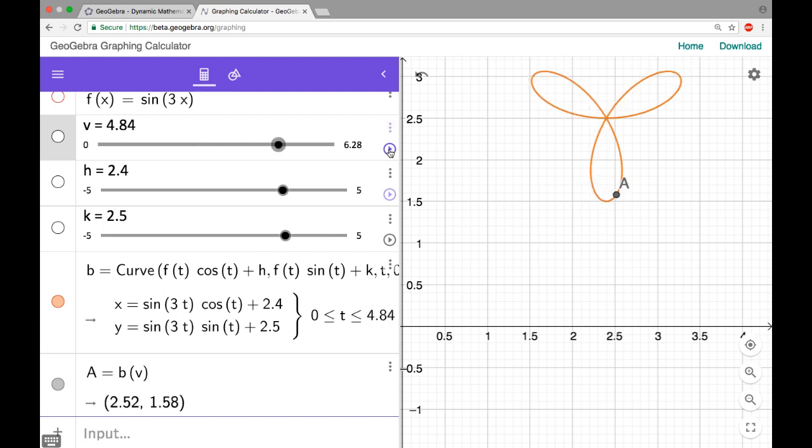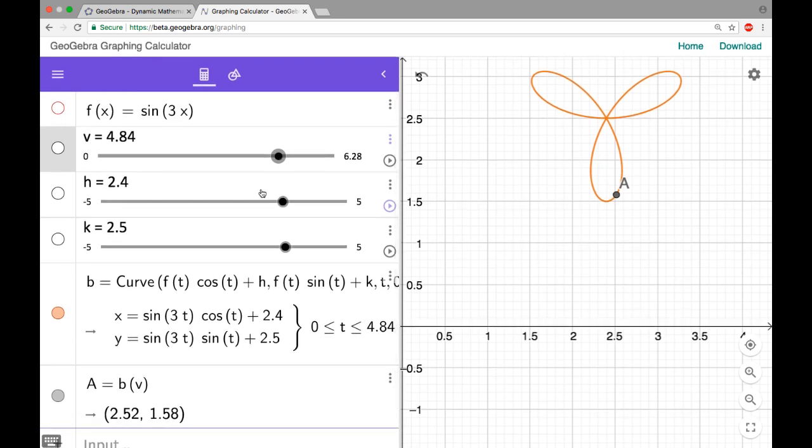So that's how I like to graph parametric, rather polar coordinates using GeoGebra, and what I basically do is I use parametric equations. So I hope you found this helpful, and good luck.